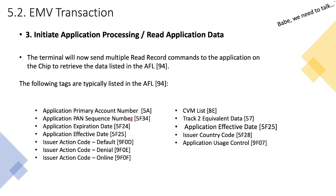Basically, the terminal asks: what's the primary account number, tag 5A? If there's a PAN sequence number, I'd like to know it. I need to know the expiration date of the application, the effective date, and the three issuer action codes — when the issuer action codes are shared with the terminal. The CVM list is a list of the various CVM types that the card supports. It also asks for track 2 equivalent data, which is added to the ISO 8583 message if the transaction goes online. Also issuer country code and application usage control are typically required.